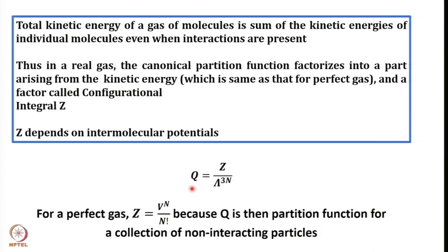This configurational integral Z depends upon intermolecular potentials. The canonical partition function is represented as Z / λ^(3N). For a perfect gas, this equals V^N / N!, where V is the volume of the container, because Q is the partition function for a collection of non-interacting particles. If Z = V^N / N!, we are talking about a perfect gas with non-interacting particles.